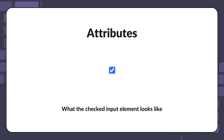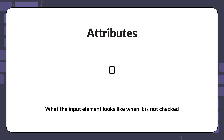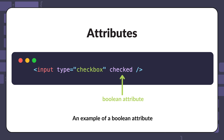The checked attribute does not require a value. If it is present, the checkbox will be checked by default. If the attribute is not present, the checkbox will be unchecked. This is known as a Boolean attribute. You will learn more about Booleans in general when you get to the JavaScript section.